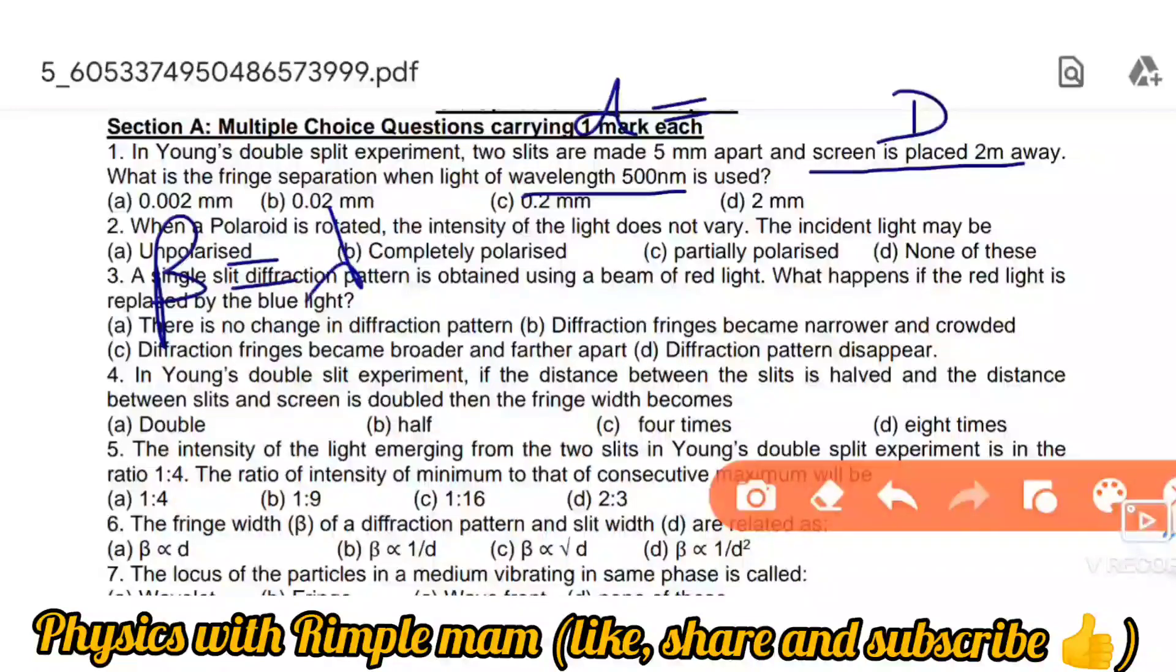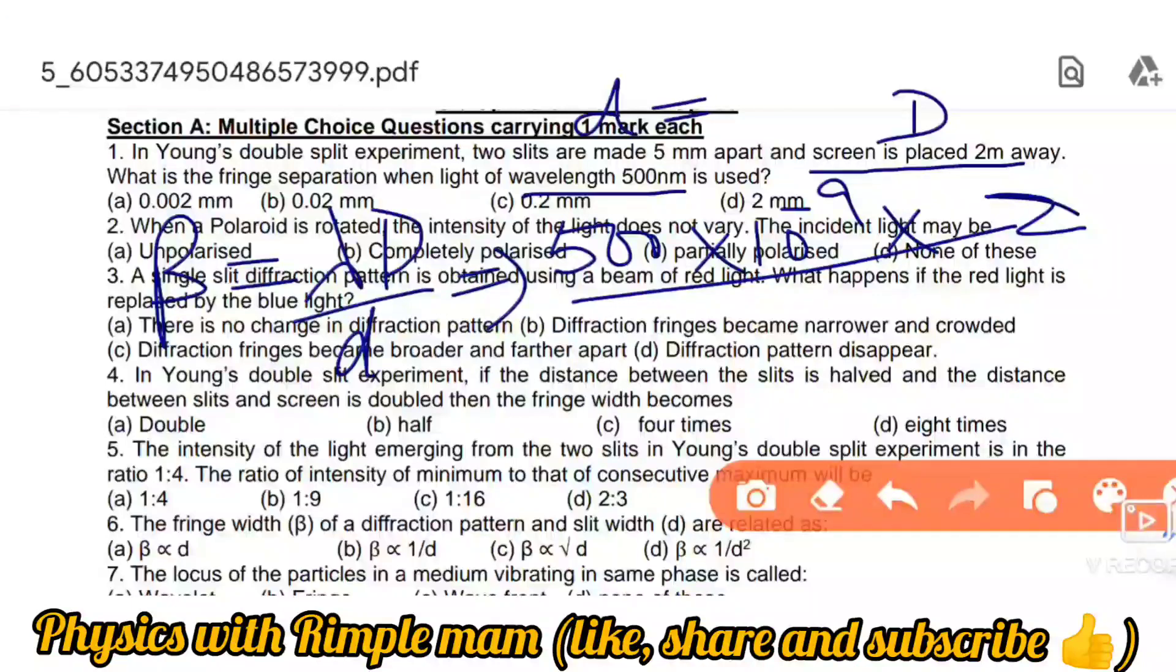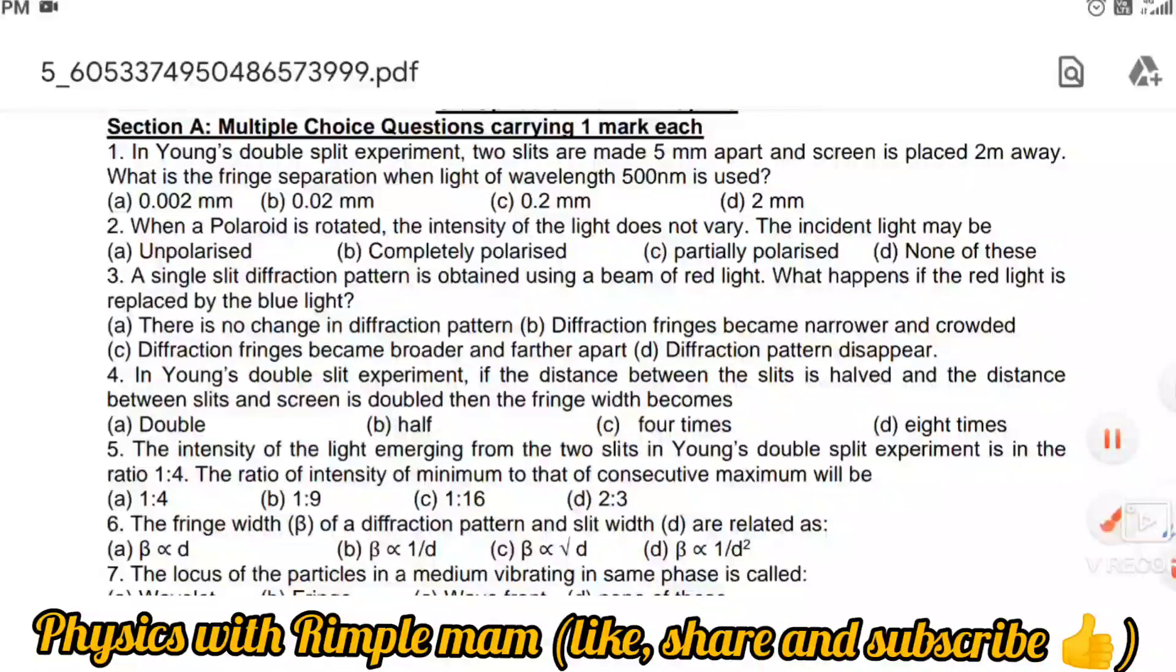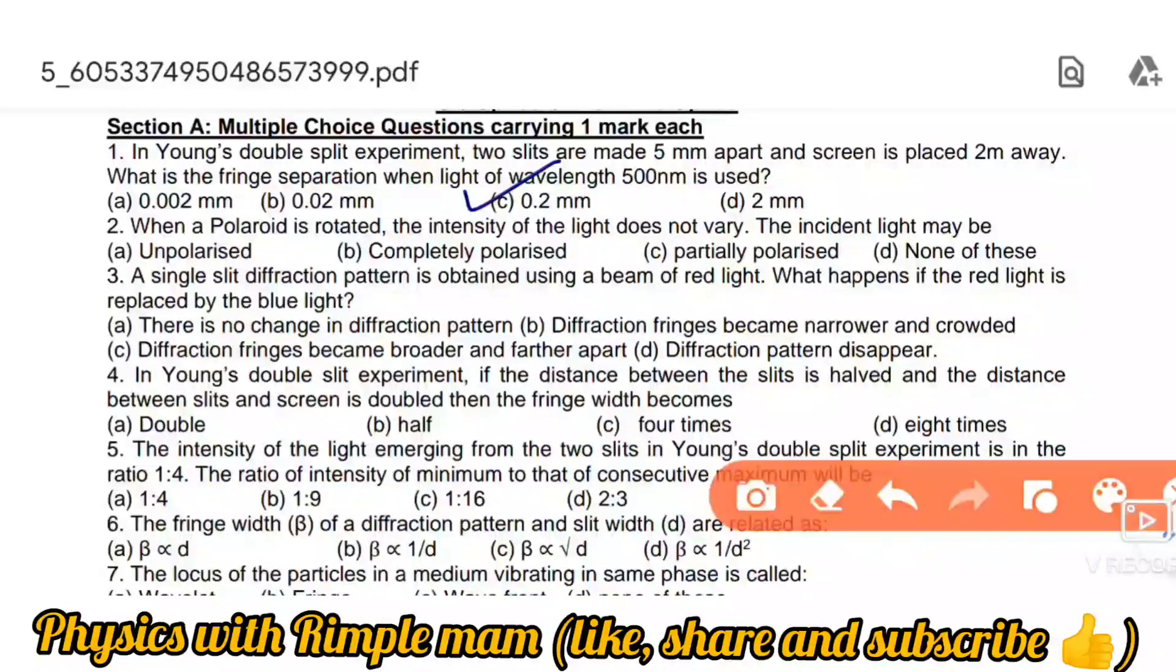The formula is beta equals lambda D over d. This is the most important formula. Lambda is 500 into 10 raised to power minus nine. Capital D is 2 meters and small d is 5 millimeters, which is 5 into 10 raised to power minus 2 meters. When we solve this, the answer is 0.2 into 10 raised to power minus 3 meters. Since all answers are given in millimeters, this is 0.2 millimeters. So the answer is option C.